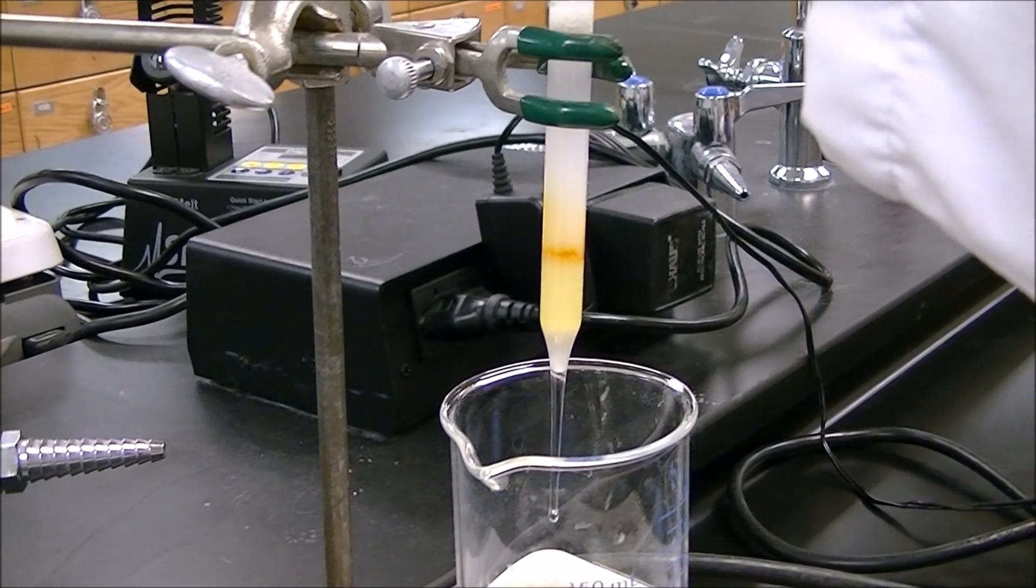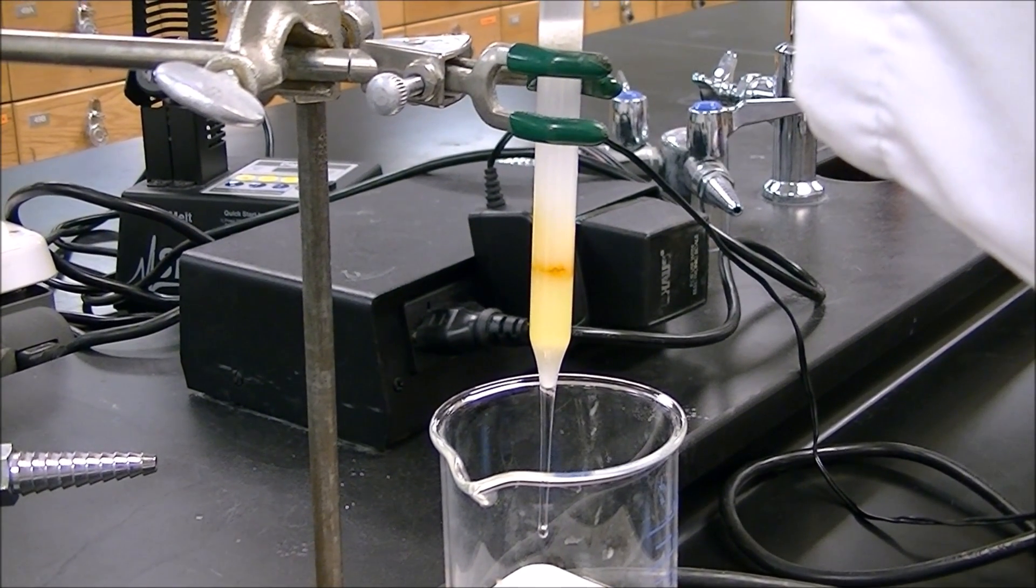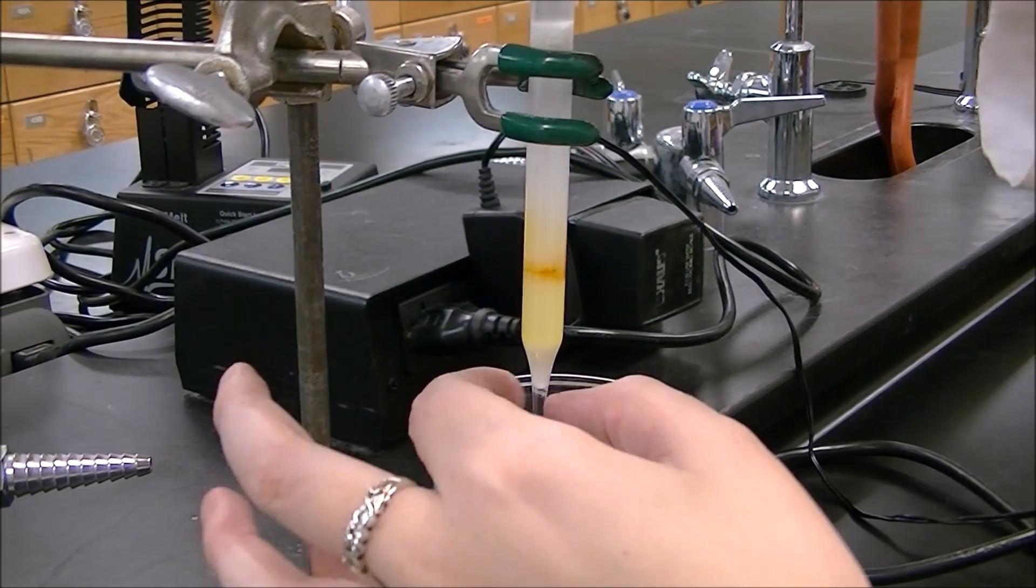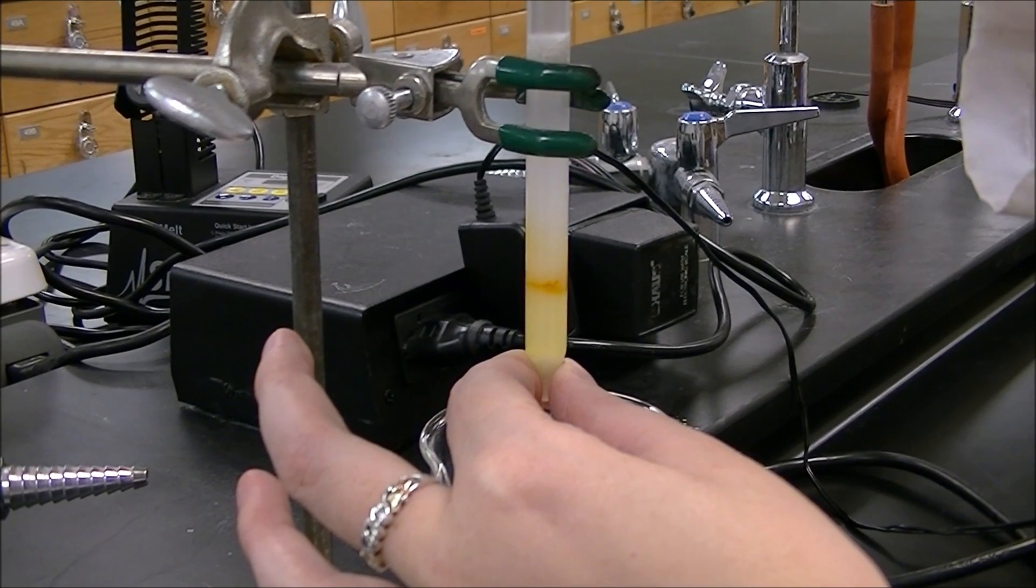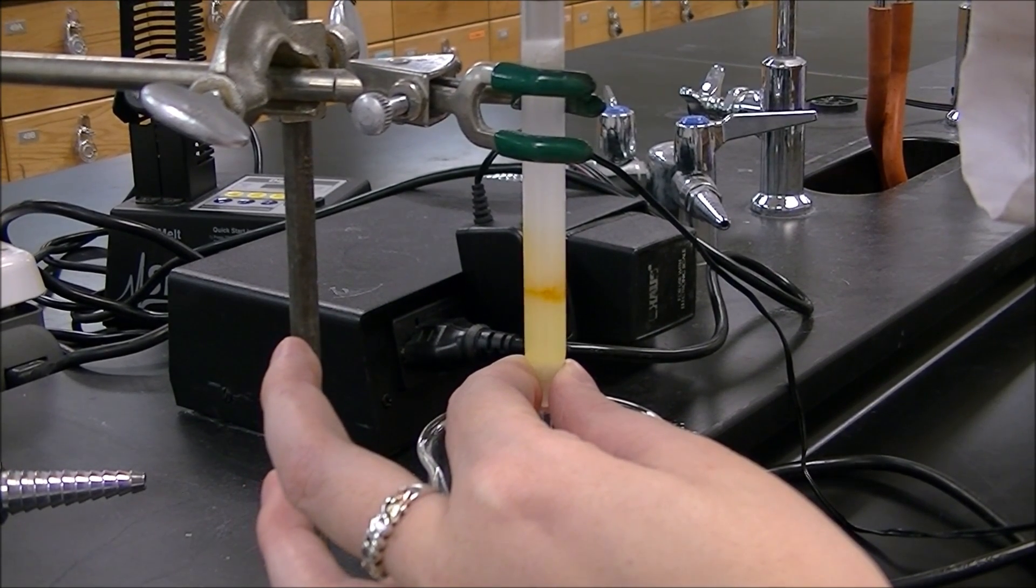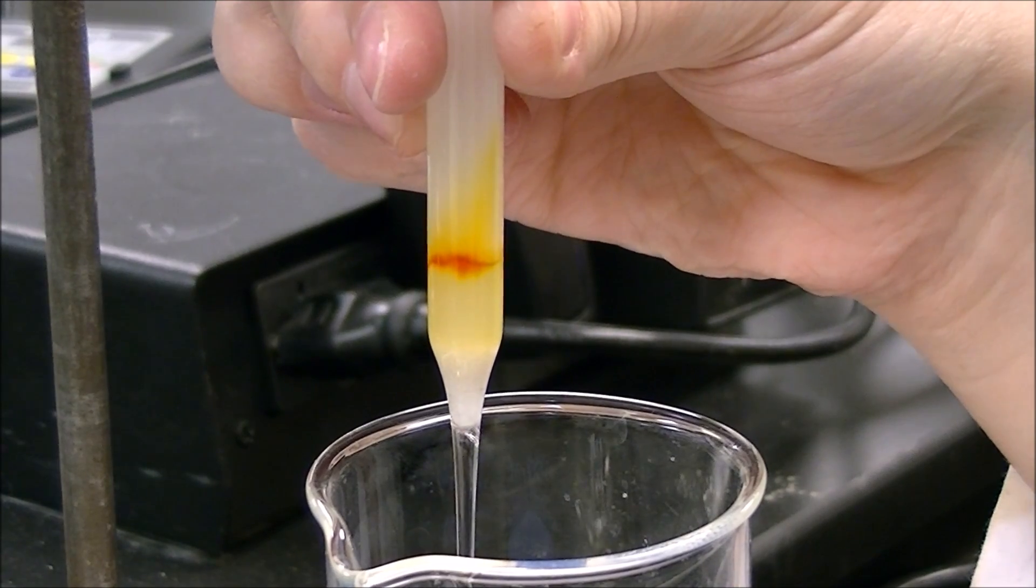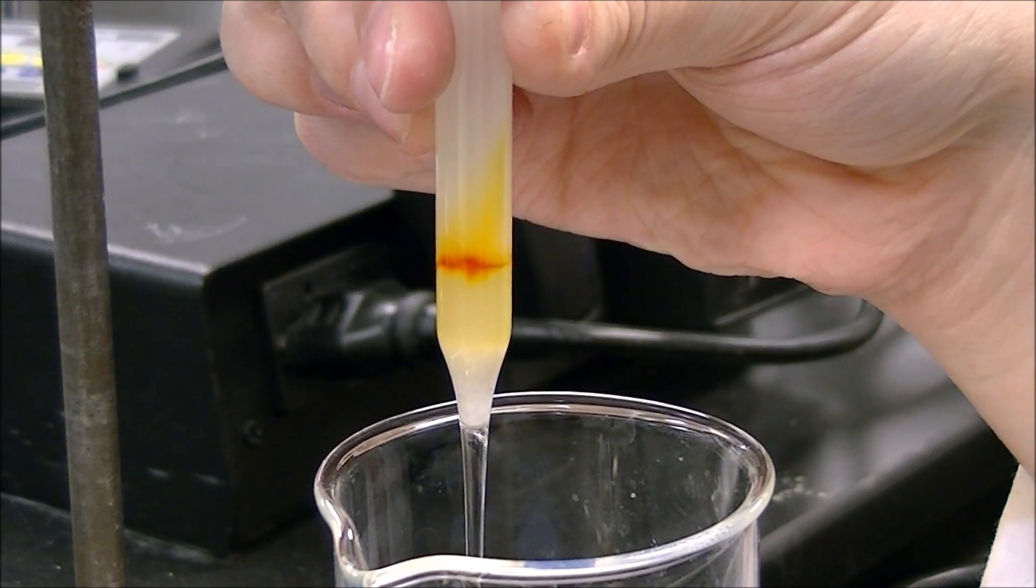Once you've begun your third collection, it may be a good idea to increase the polarity of the mobile phase by making a solution with a higher concentration of methanol. This will help push off the cis isomer faster. Continue running the column until it is completely flushed of the mixture.